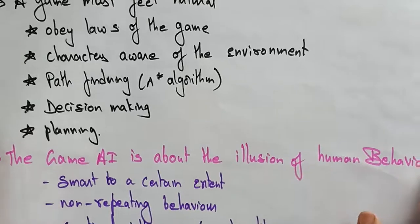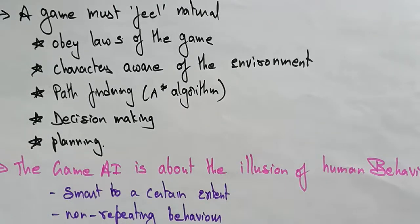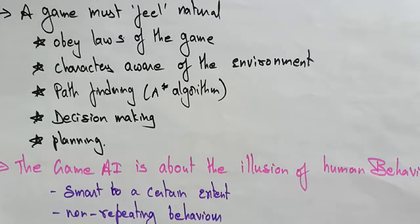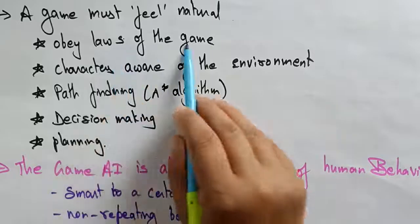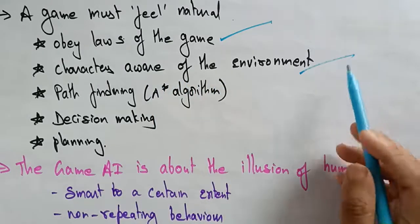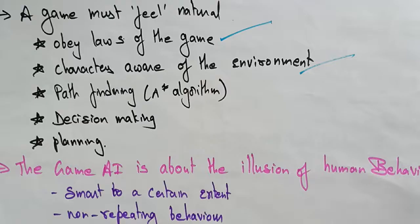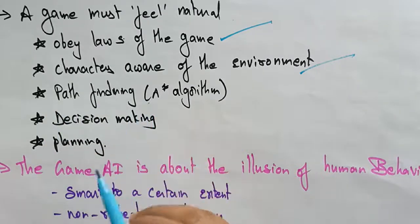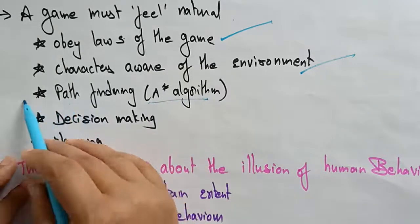A game must feel natural. When you start playing a game, you observe everything, try to know the concept, and feel everything naturally — touching and thinking. Just like that, AI playing a game must also feel natural. It obeys the laws of the game, and its characters are aware of the environment. For pathfinding — solving the problem of finding a route — it uses the A* algorithm to find the path.